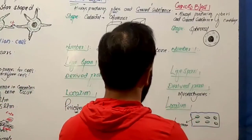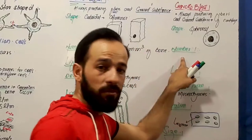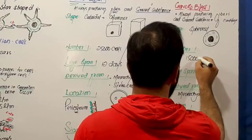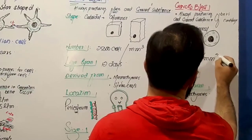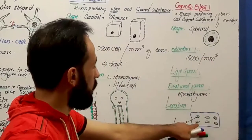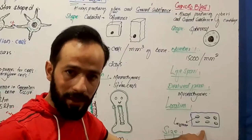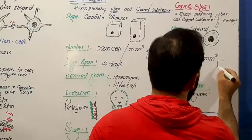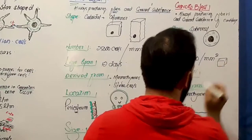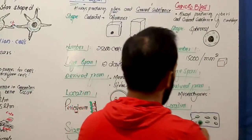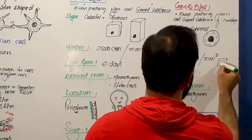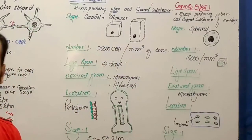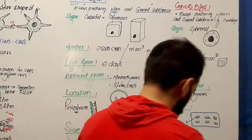The next important feature of these cells is their number. They are present at 15,000 cells per millimeter square of this cartilage. If you take a very small piece of 1 mm square of the cartilage, you see that there are about 15,000 chondroblasts present in that area.